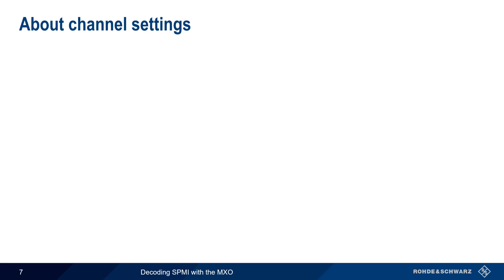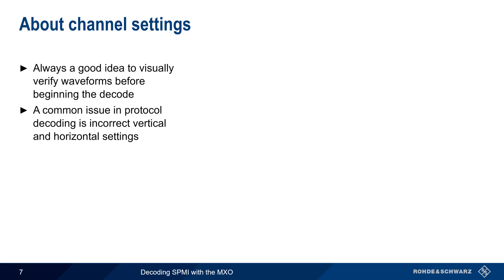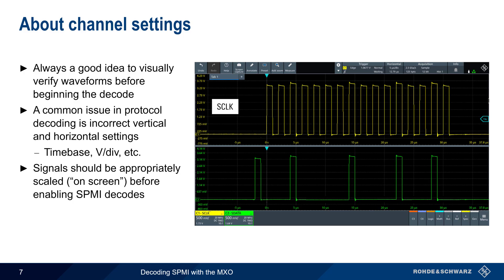Before enabling the decode, it's always a good idea to visually verify waveforms and channel settings. A common issue in serial decoding is incorrect vertical and horizontal settings, such as the wrong time base or the wrong volts-per-division setting. In this example, the channels connected to Serial Clock and Serial Data both have appropriate vertical and horizontal scaling. The signals are on-screen, and the time base is long enough to capture one or more SPMI frames. The autoset function of the MXO can also be very helpful when configuring the vertical and horizontal systems.